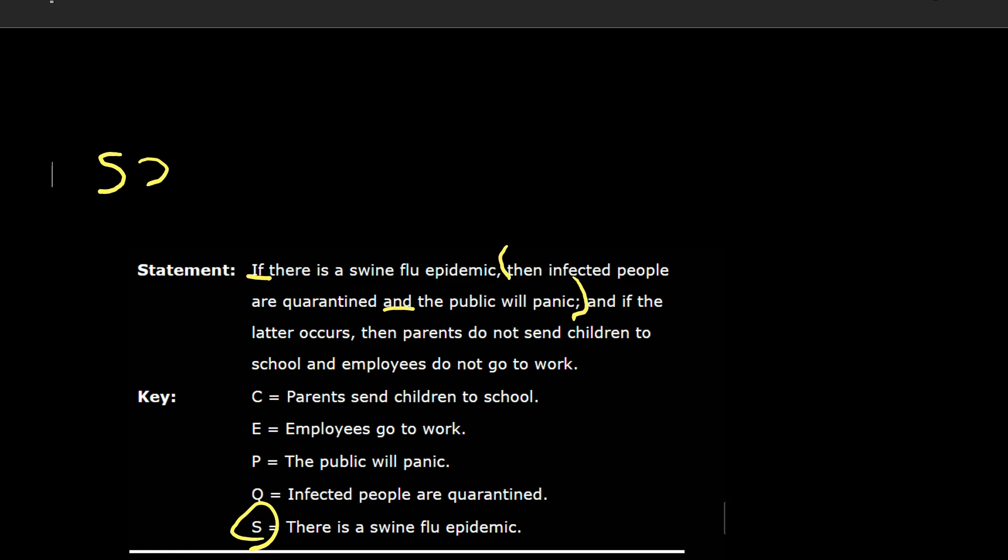So infected people are quarantined, that is Q. And the public will panic is P. So we have if S, then Q and P.